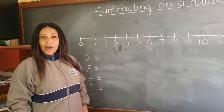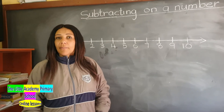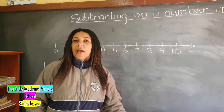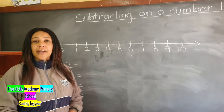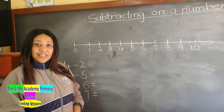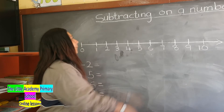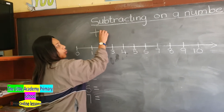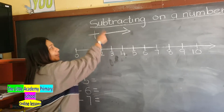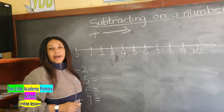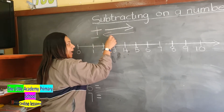If you remember, last week we were adding on a number line. So this week we are going to be subtracting on the number line. We said when we add on a number line, we move forward. So today as we are subtracting on a number line, which means we are moving backwards.